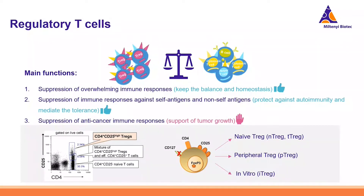Looking more closely at regulatory T-cells, they don't have a unique marker. They are identified by the expression of CD4 and CD25, but also by the absence of CD127, and there is also an internal marker which is FOXP3. T-regs are classified into three main subtypes based on where they develop: naive T-regs, peripheral T-regs, and in vitro or induced T-regs.